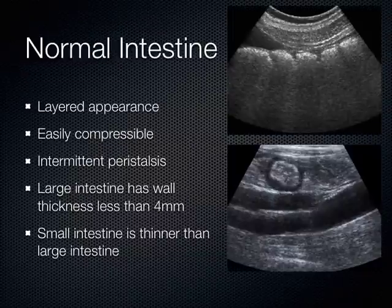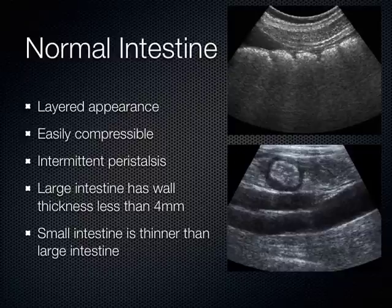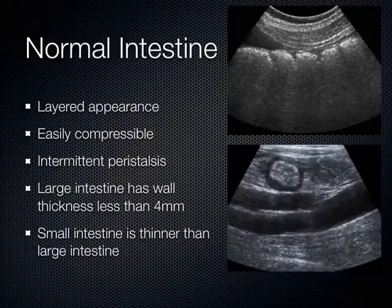This is normal intestine — what we expect to see is a layered appearance, and it's easily compressible. Anybody in this room, including the models this afternoon, when you compress on those loops of bowel, they just squirt closed with no problem. They peristalse every 10 to 20 seconds — you'll see peristalsis roll through, and that's normal. Sometimes with disease states of the bowel, you can see hyperperistalsis initially, and then eventually aperistalsis or no movement at all in the bowel.